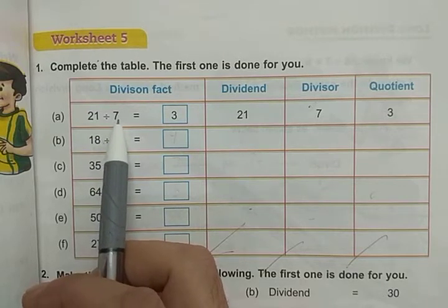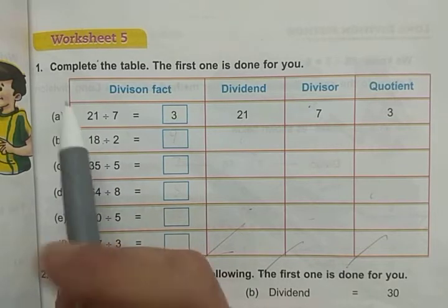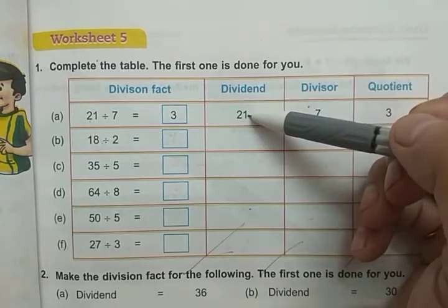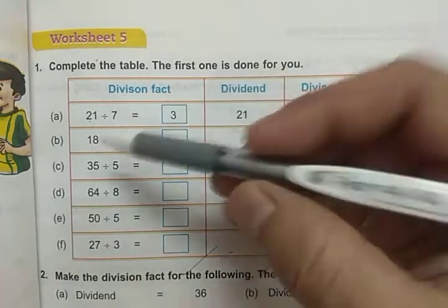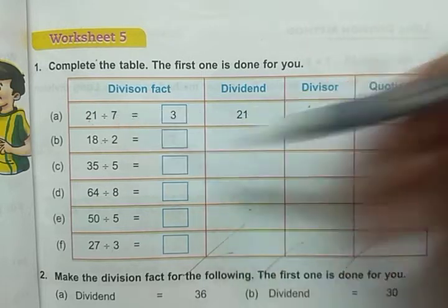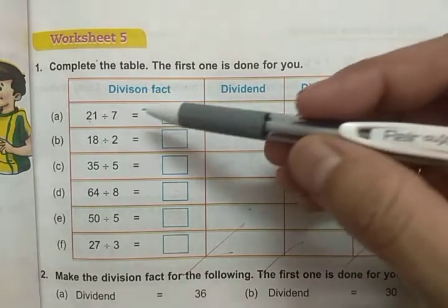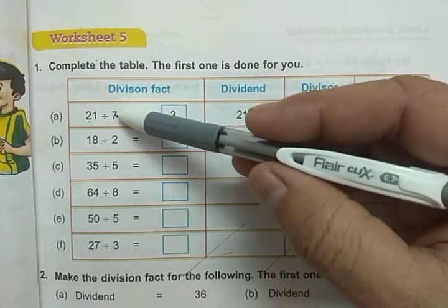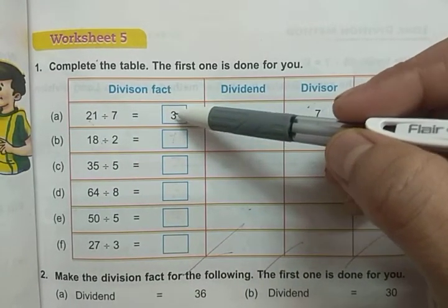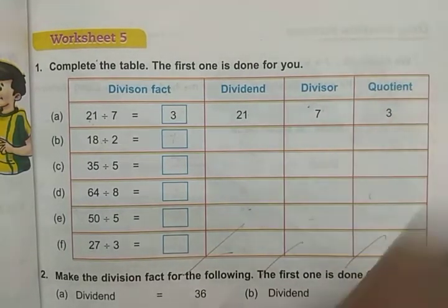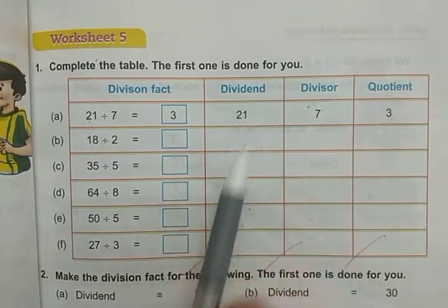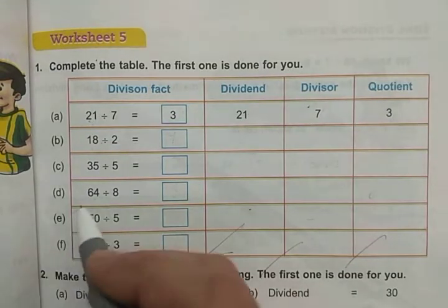7 is the number which divides the dividend. The number to be divided is the dividend, so the dividend is 21. 7 is our divisor. Reciting the table of 7: 7 threes are 21, so the result is 3 — that means 3 is our quotient. We write the dividend, divisor, and quotient in these three columns.